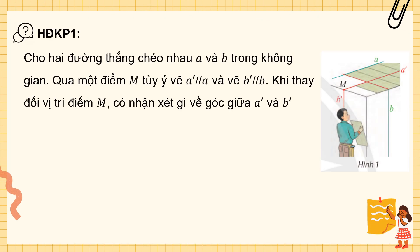Bây giờ cô sẽ có 1 câu hỏi dành cho lớp. Cho 2 đường thẳng chéo nhau A và B trong không gian. Nếu qua 1 điểm M tùy ý, cô sẽ vẽ 1 đường thẳng A' song song với A và vẽ 1 đường thẳng B' song song với B. Khi cô thay đổi vị trí điểm M, có nhận xét gì về góc giữa A' và B'?